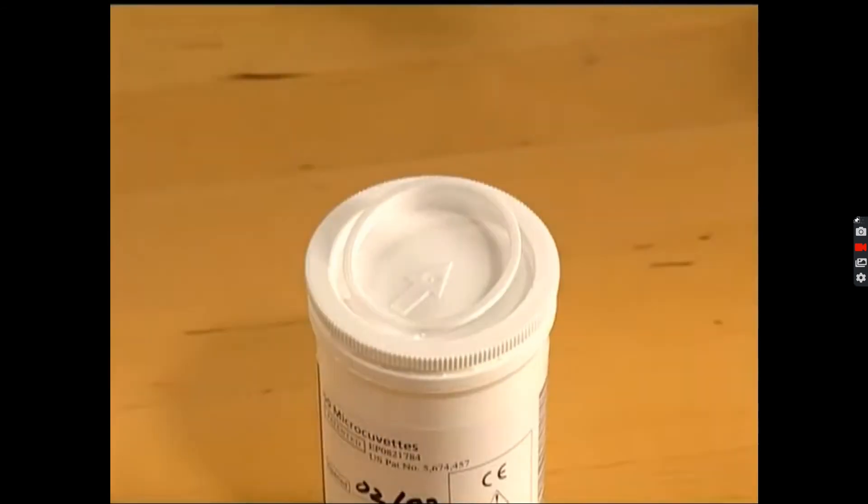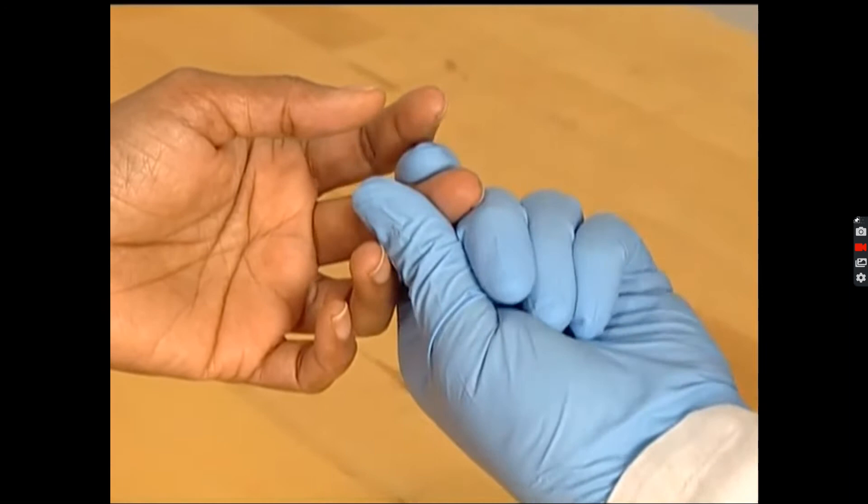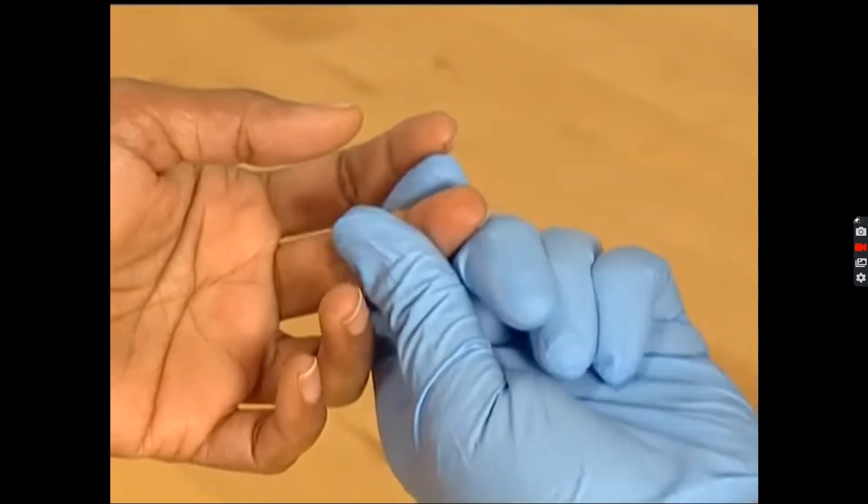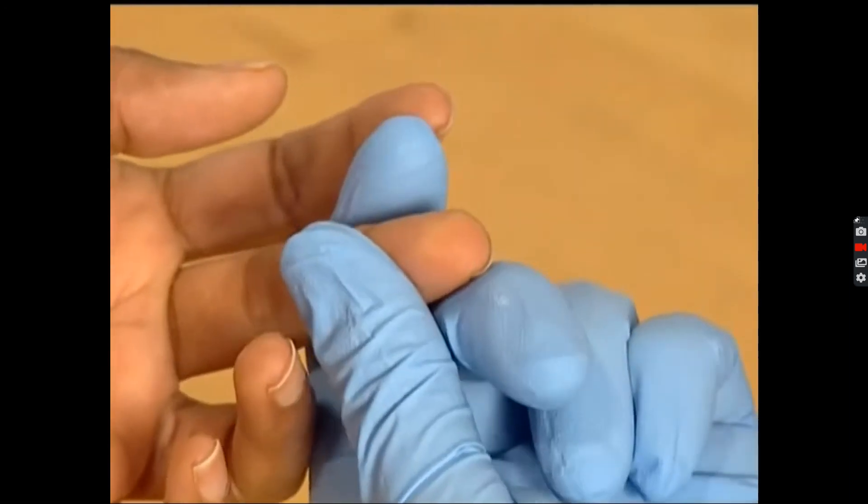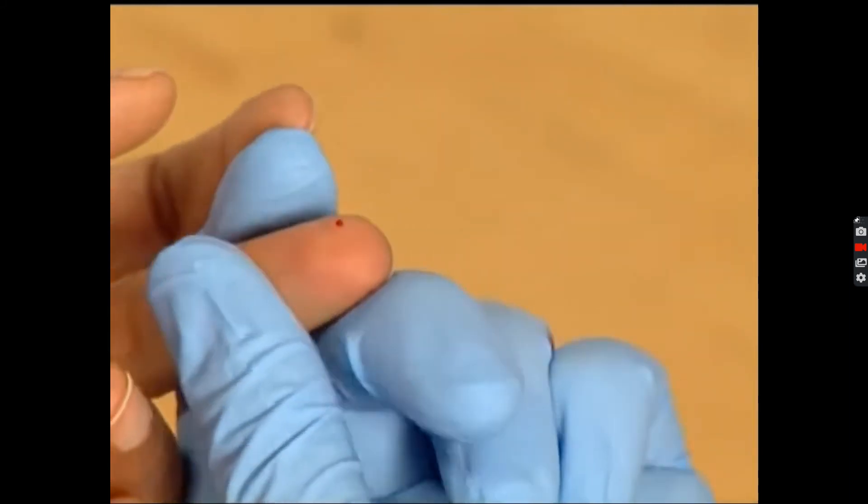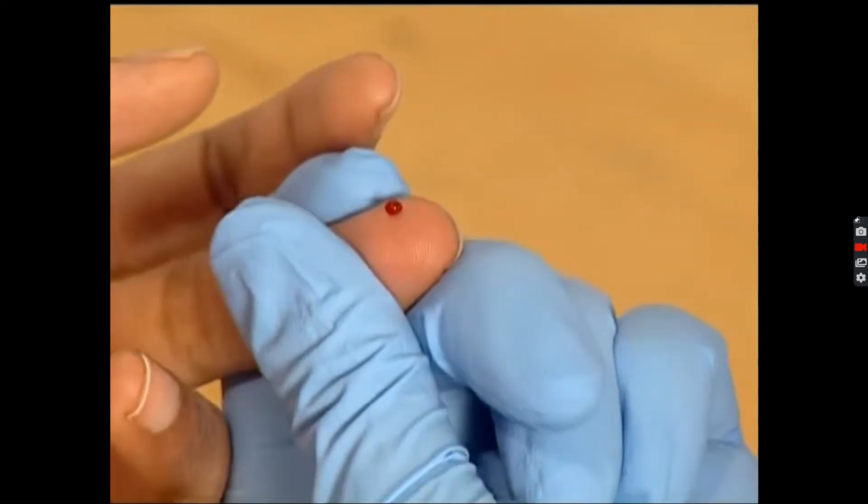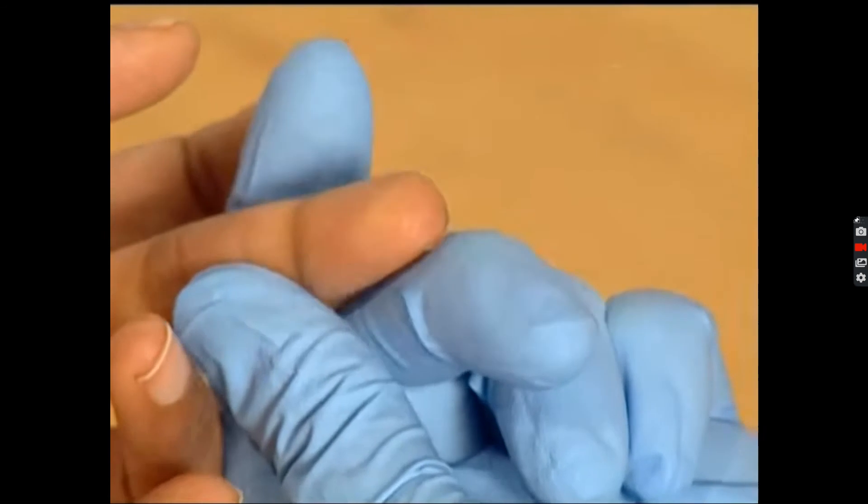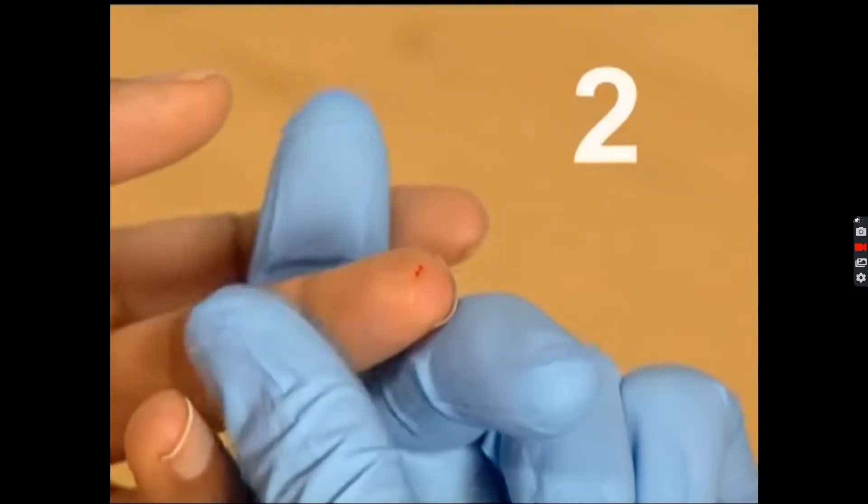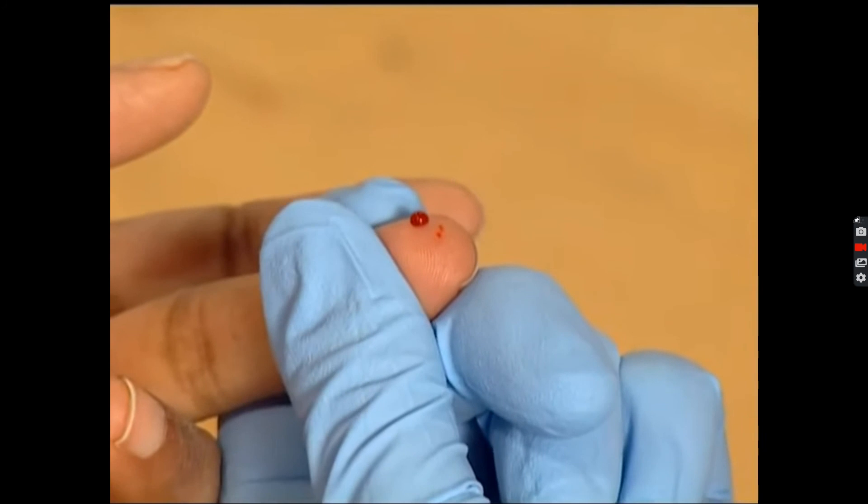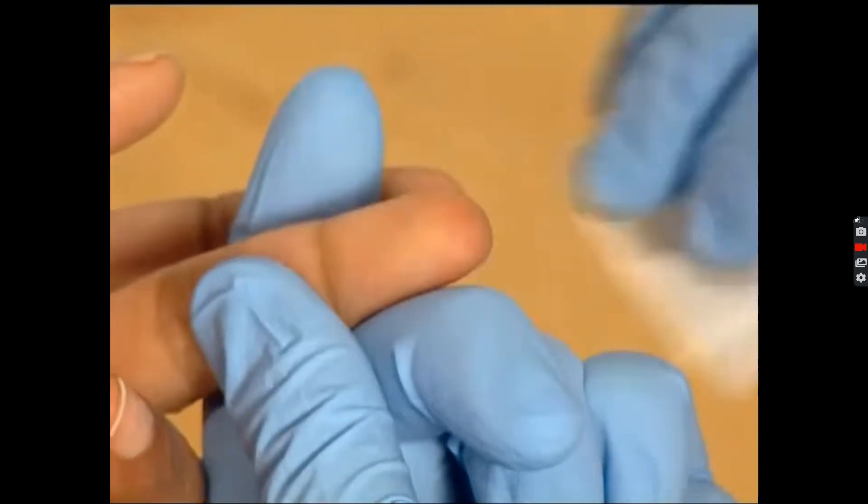Remove a single microcuvette from the container. Collect a drop of capillary blood from your patient. It is quite essential here that you use proper technique for collecting the blood and that you wipe off any remaining alcohol three times before using the actual blood. So this is the third drop.